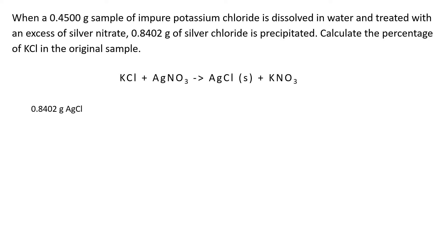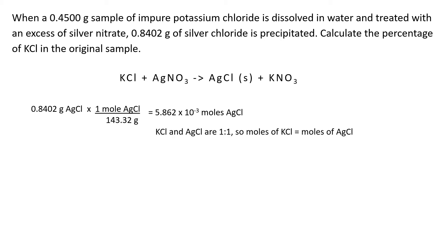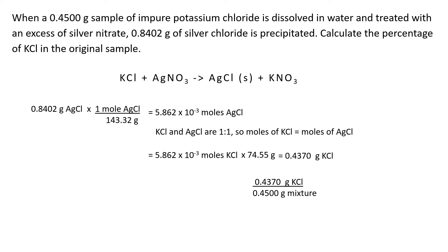Start with one of the two pieces of information given — the mass of AgCl, which is the product. Convert that to moles of AgCl. Then look at its molar relationship to KCl; according to the equation, it's one to one, so however many moles of silver chloride you have, you'll have an equal number of moles of KCl. Convert those moles to grams by multiplying by the molar mass of KCl, then divide by the total mass and multiply by 100. You should get 97.11% KCl in this impure compound.